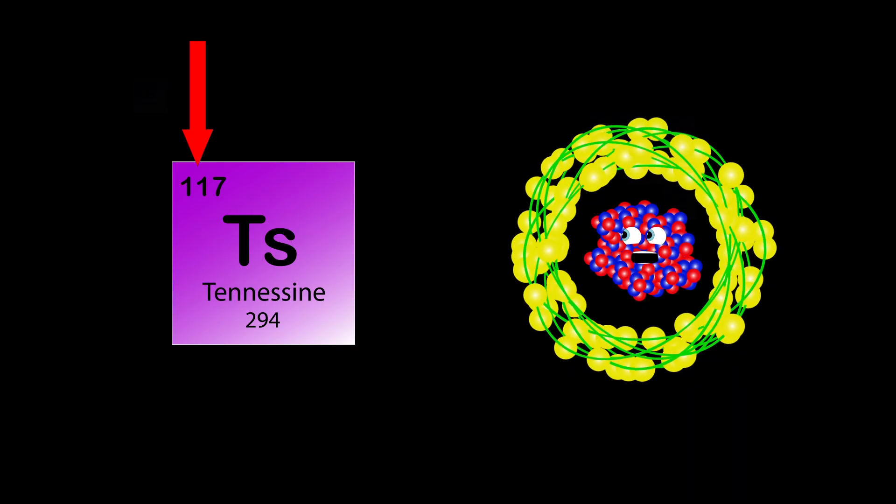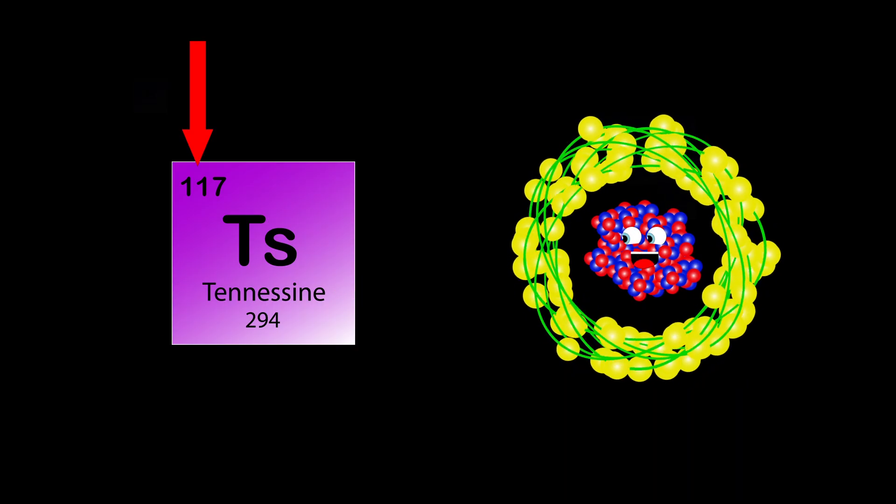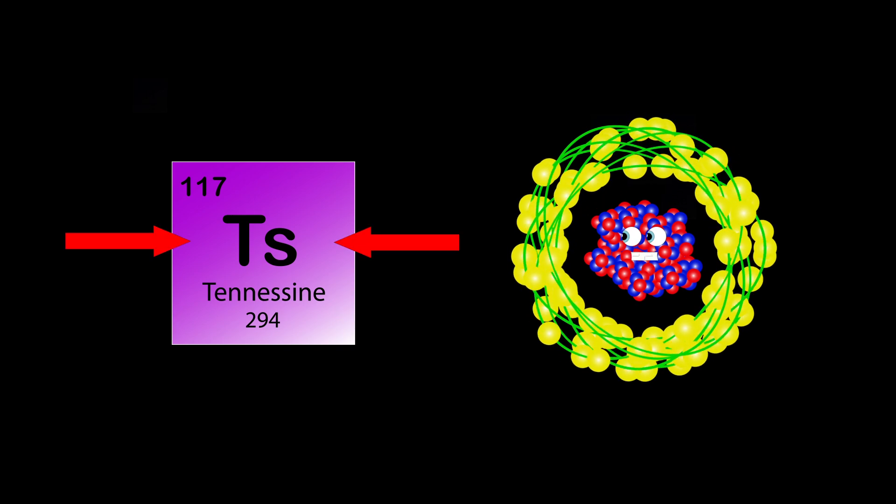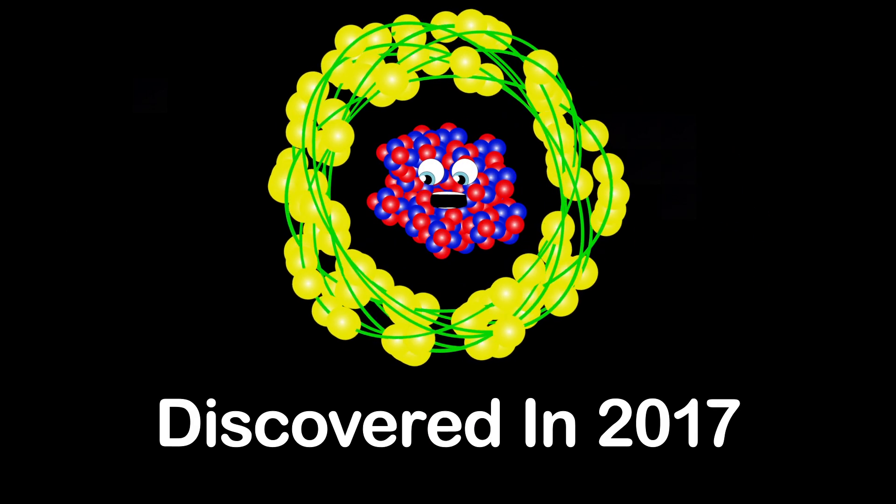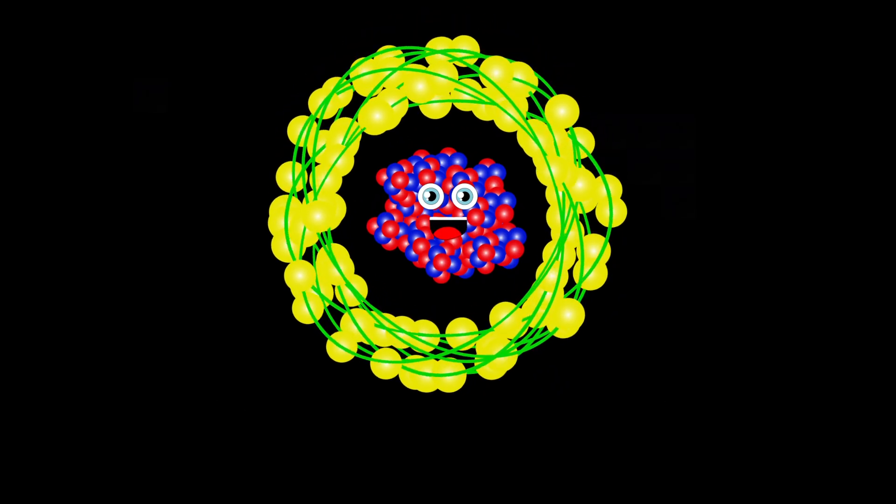I'm Tennessine, my atomic number is 117, my atomic mass is 294, symbol's Ts as you can see. Discovered in 2010, I have no home yet, but I'm expected to be in the halogens group.